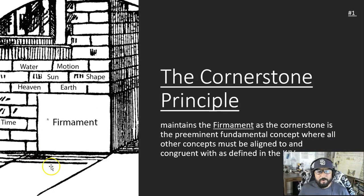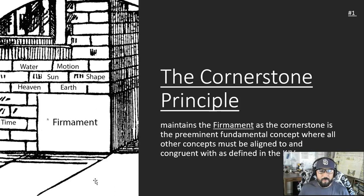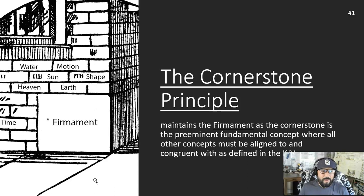The Cornerstone Principle simply says that the firmament is the cornerstone and preeminent concept where all other concepts must be aligned — just like the cornerstone of a house. Basically, the more accurately you set that cornerstone, the more you can trust that the rest of the structure, as long as it's aligned to that cornerstone, will also be accurate. So when you look at the Bible and apply the firmament as the cornerstone when trying to define your worldview, and as long as everything else aligns to it, you start to see an actual and accurate structure of the world.